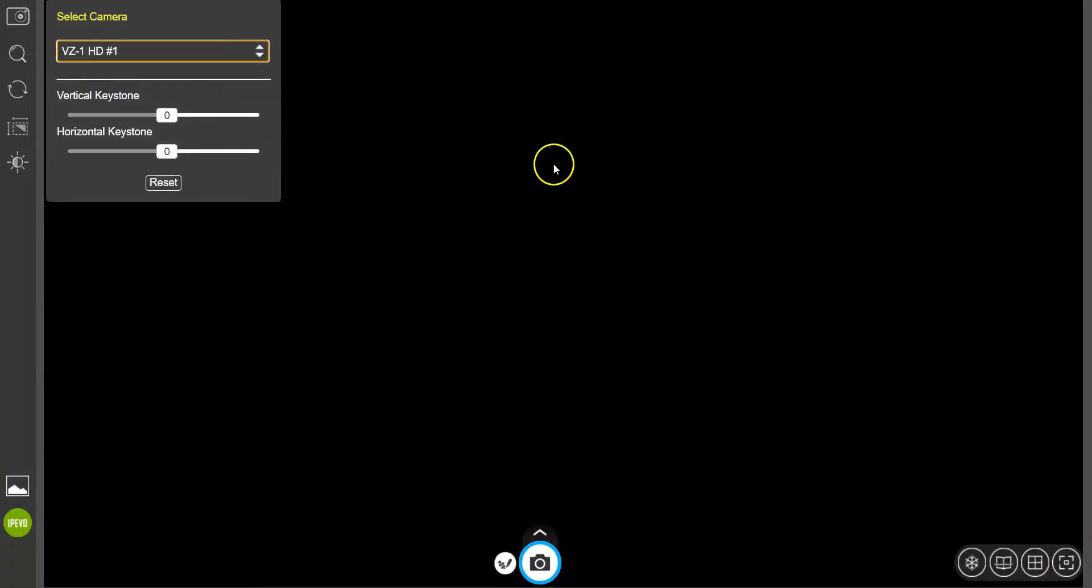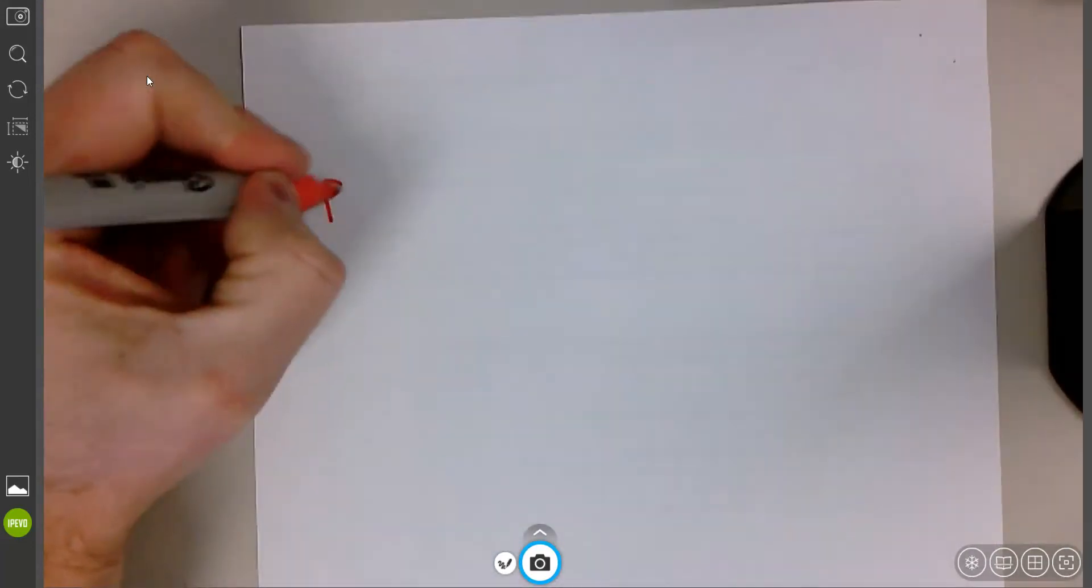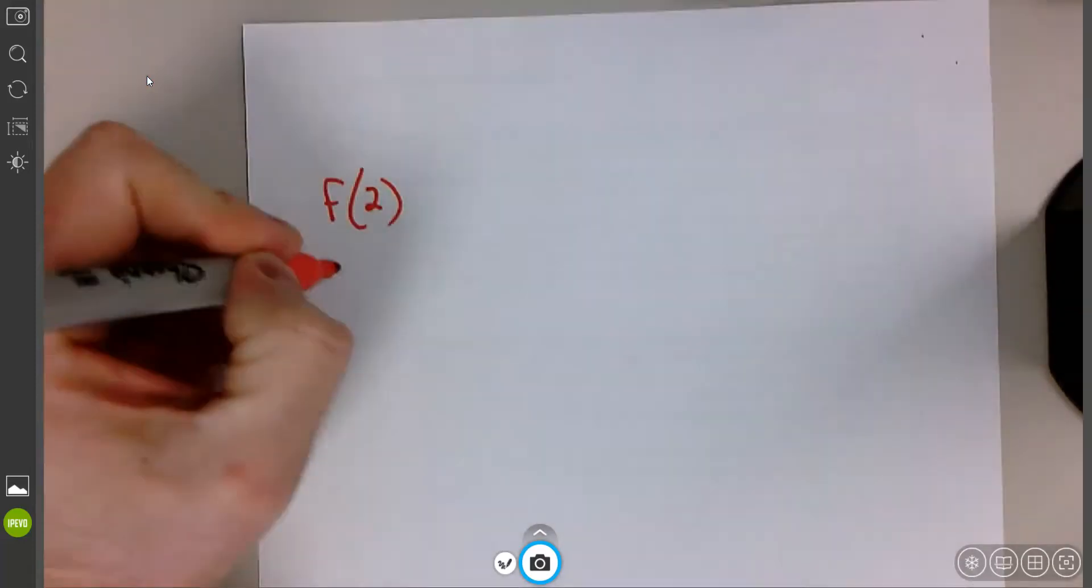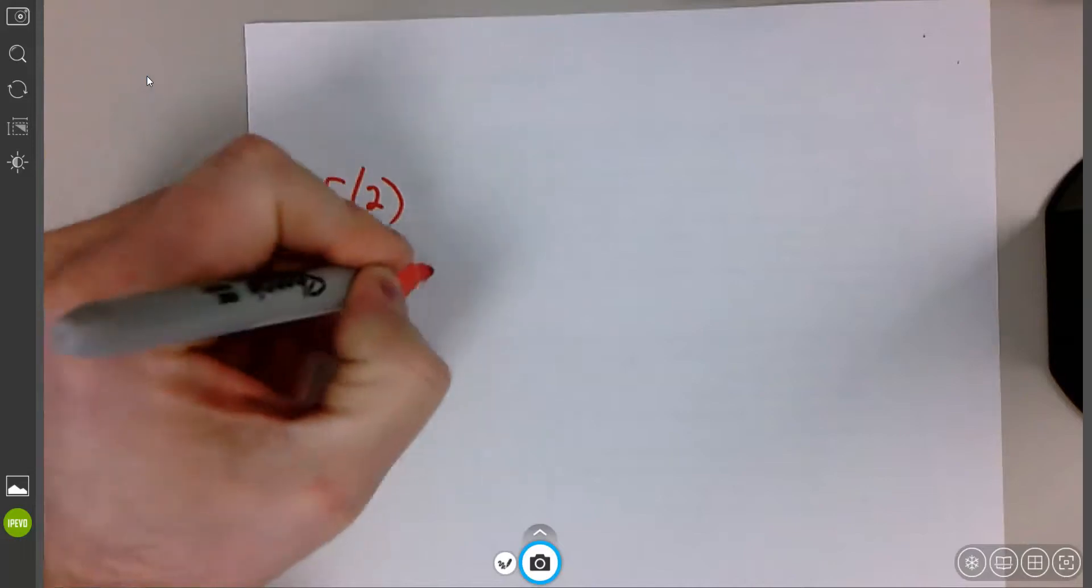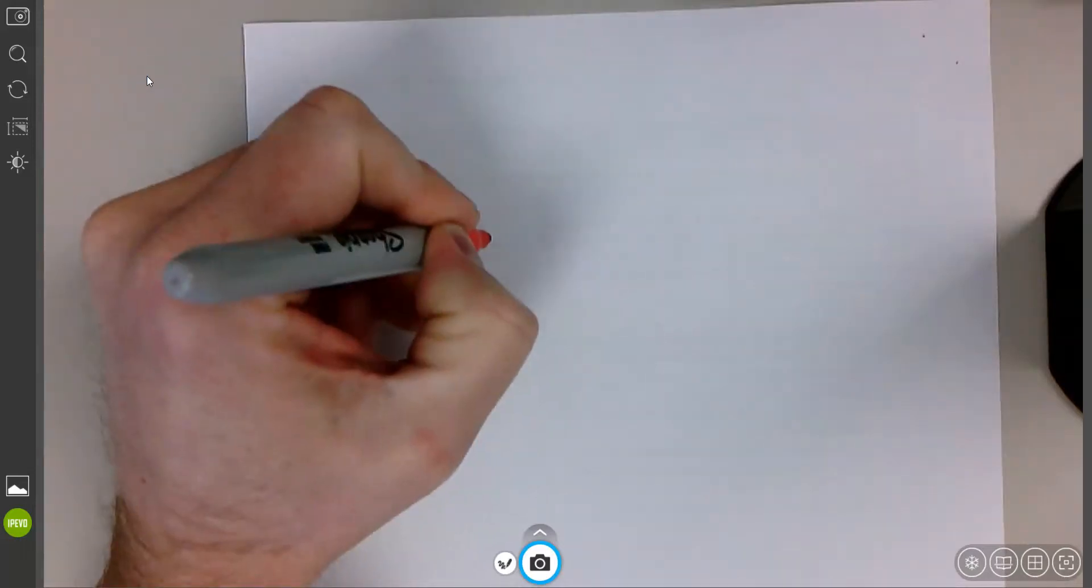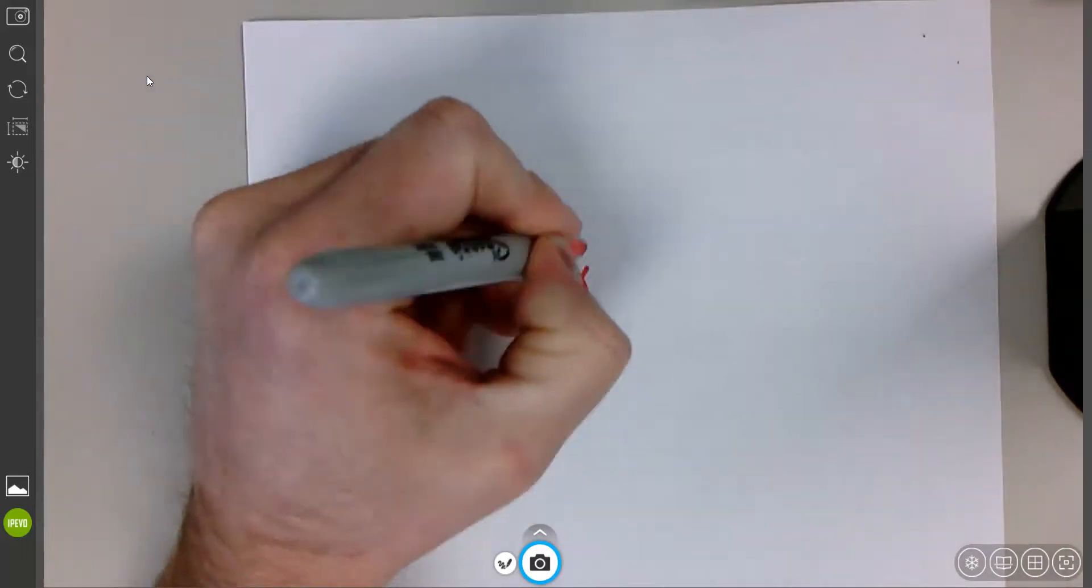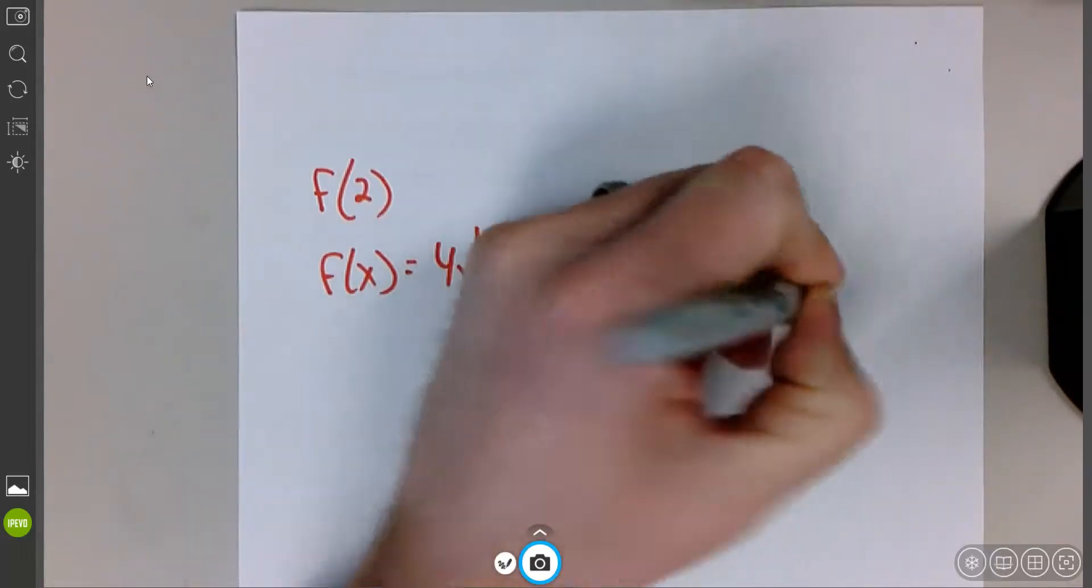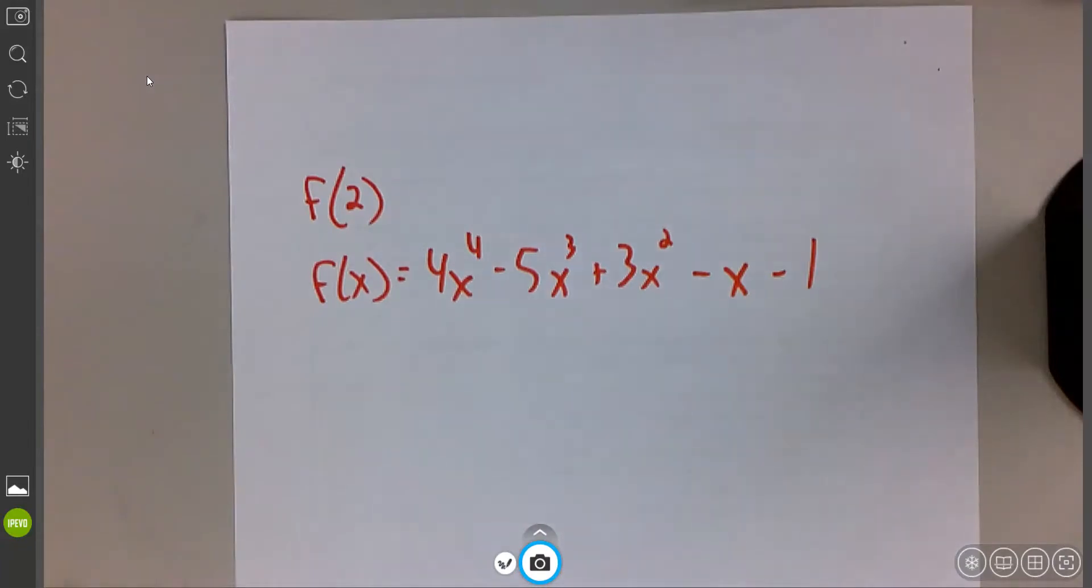I'm going to share my screen with you. This is what it looks like. Let's say, for instance, you are trying to evaluate f of 2 for the function f of x equals 4x to the fourth minus 5x cubed plus 3x squared minus x minus 1. This is the type of problem we're doing.